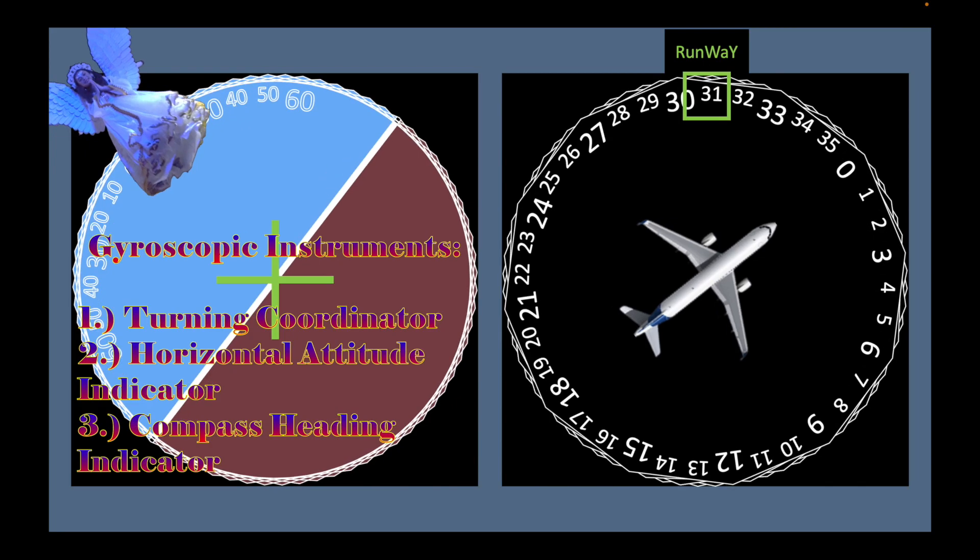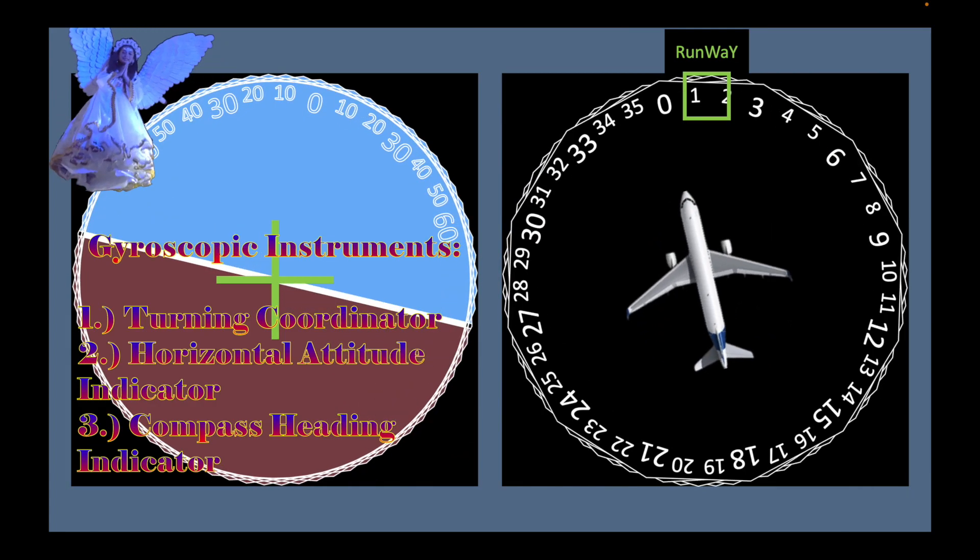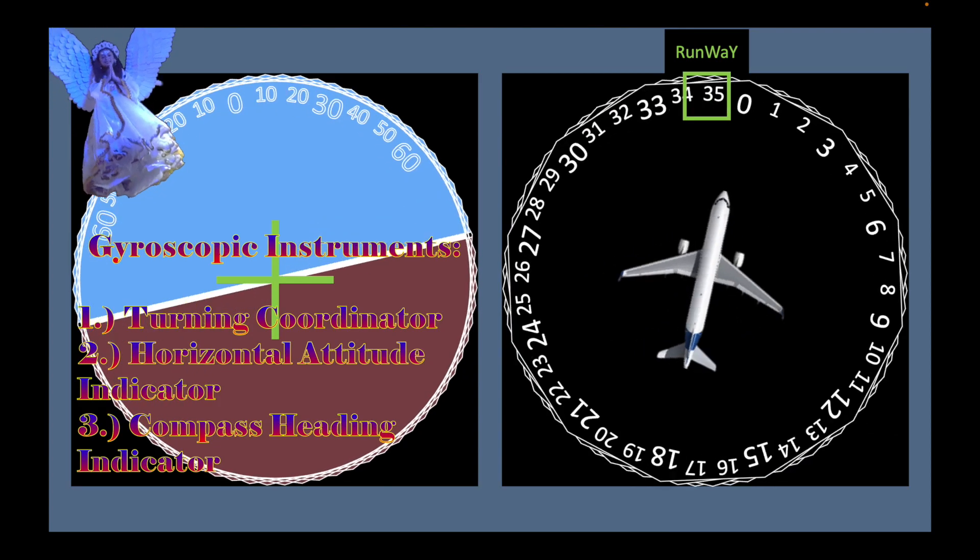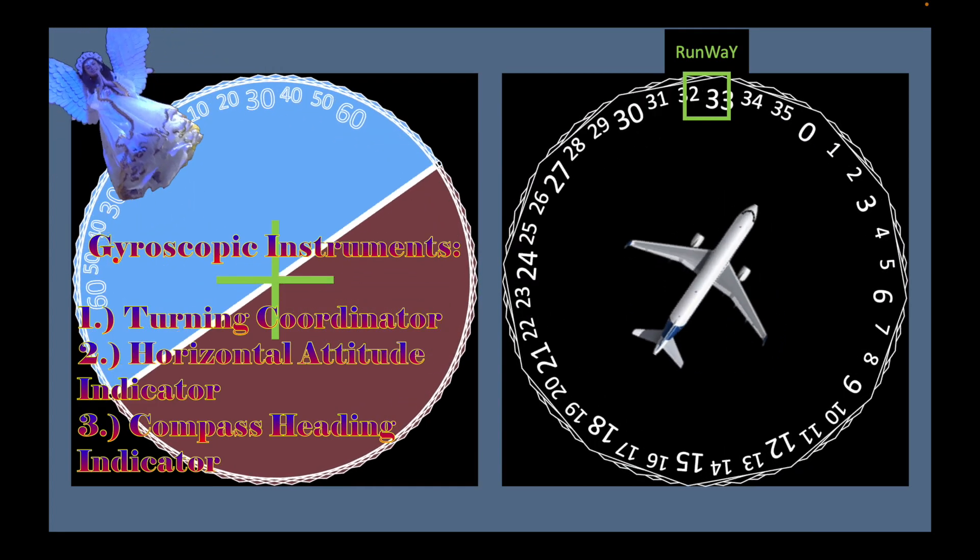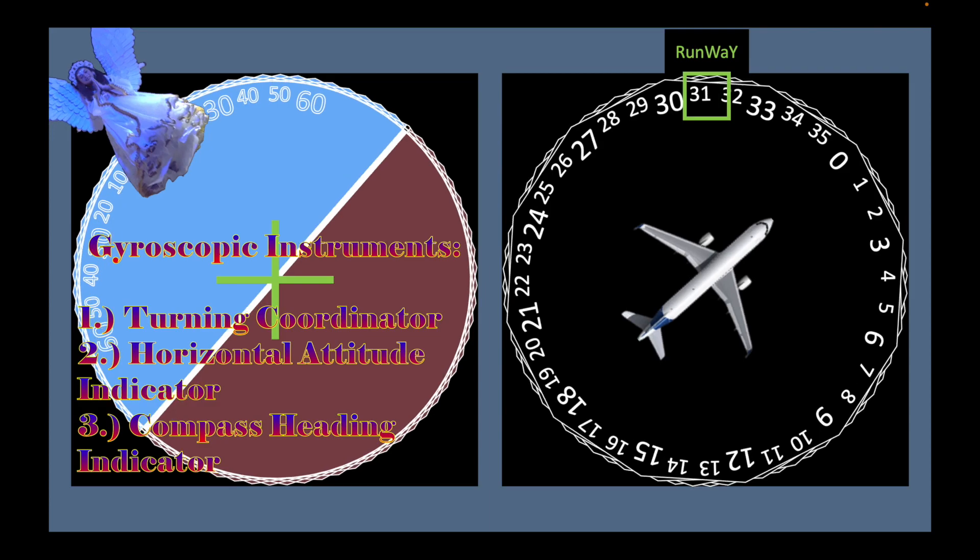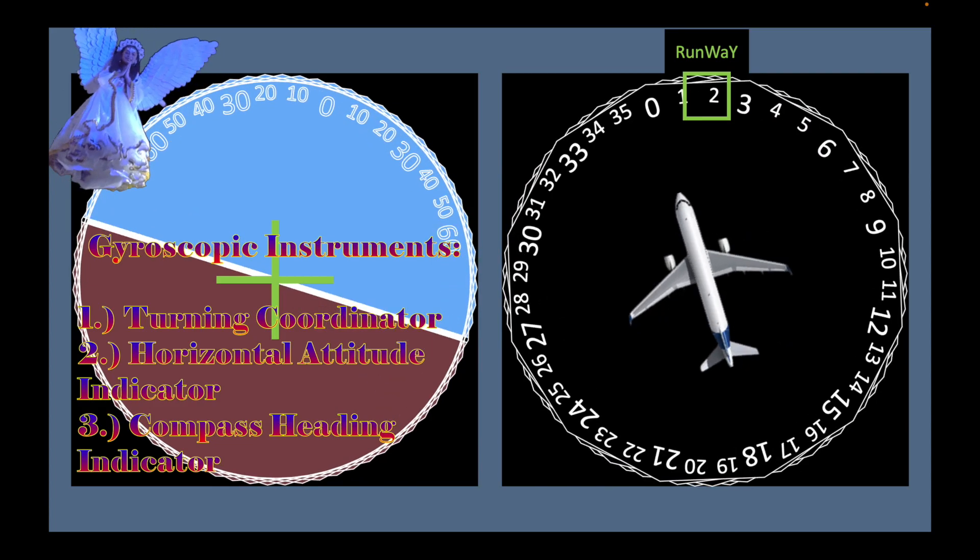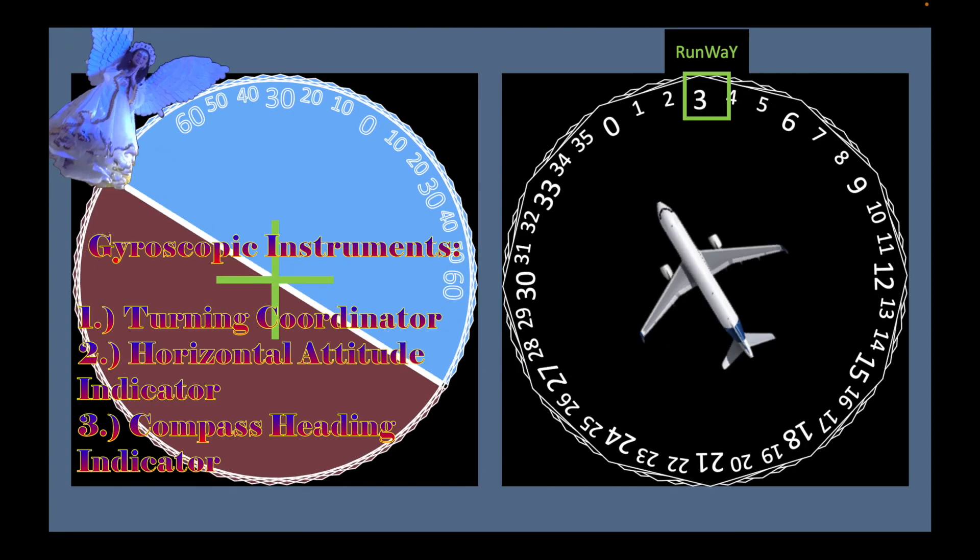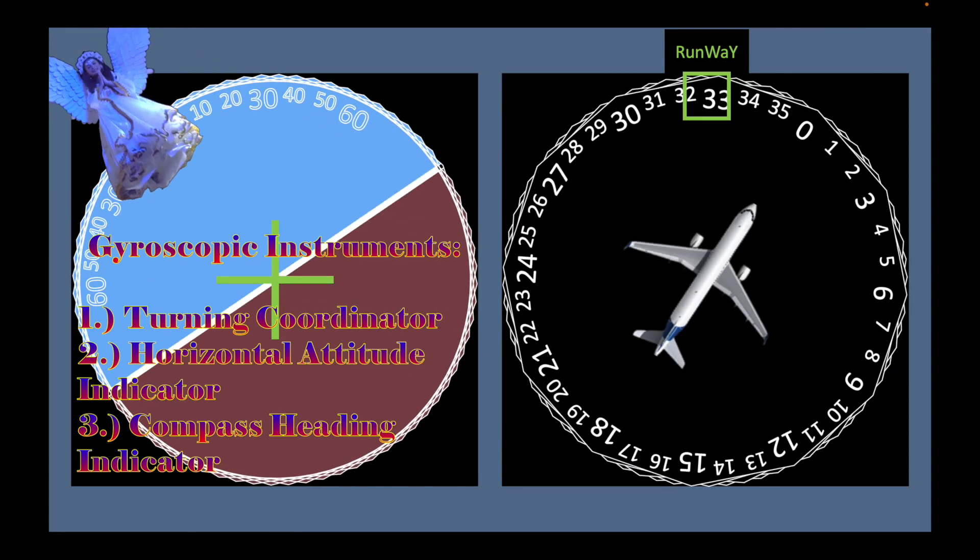A gyroscope within an instrument can provide a fixed plane of reference that does not change as the airplane rolls to the left or to the right, tilting counterclockwise or clockwise in layman's term, pitches up or down, or yaws to the left or right changing its compass heading. In other words, the compass heading indicator, horizontal attitude indicator, and turn coordinator rely on gyroscopes.